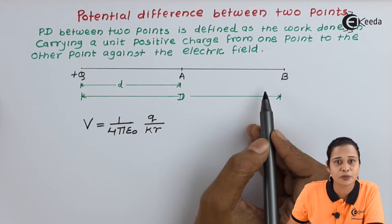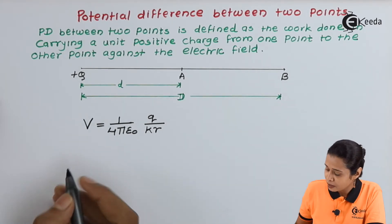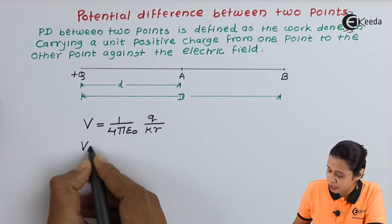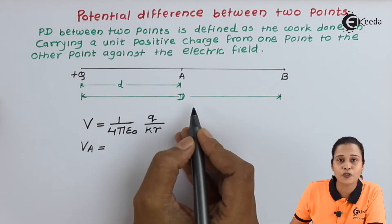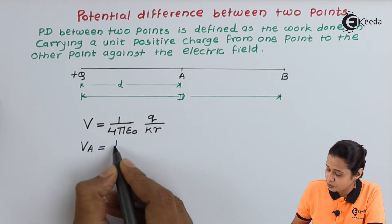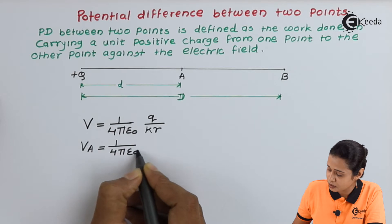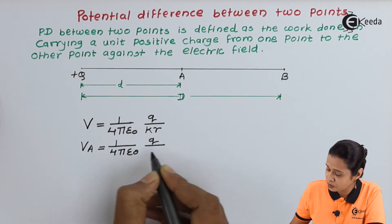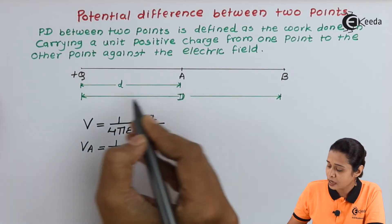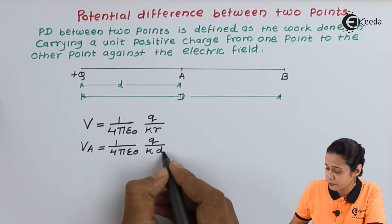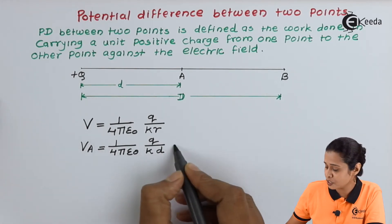Now here we have two point charges, point A and point B. So here we will write down VA. This is for point A, equals 1 upon 4 pi epsilon naught, Q upon K times d, where R is small d. This is our equation number 1.